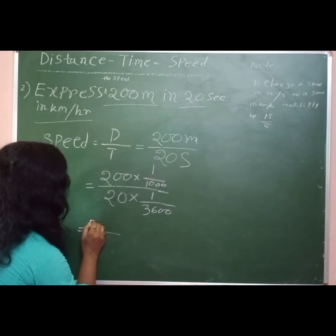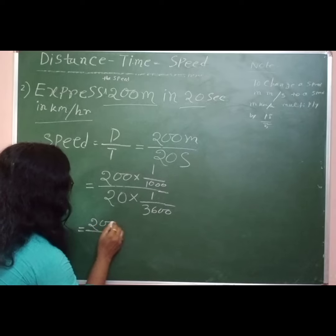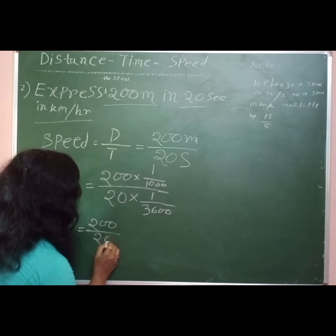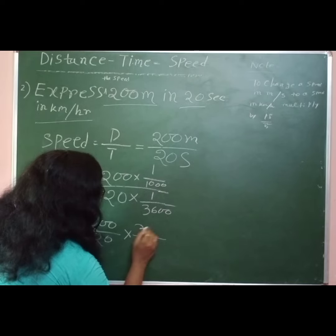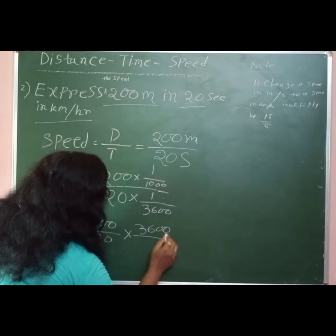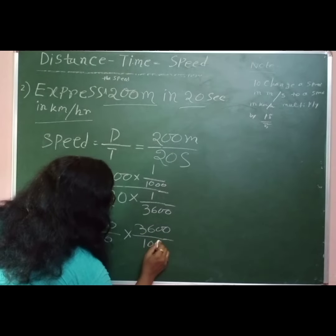So here we can write 200 by 20 and 3600 upon 1000.